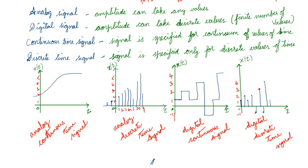To summarize: to determine analog or digital, look at the amplitude. If amplitude can take any values, it is analog; if it takes only finite or discrete values, it is digital. To identify continuous time or discrete time, look at the time axis. If the signal exists for all time, it is continuous time; if it exists only at discrete time values, it is discrete time. Do not confuse digital with discrete time — they are entirely different.